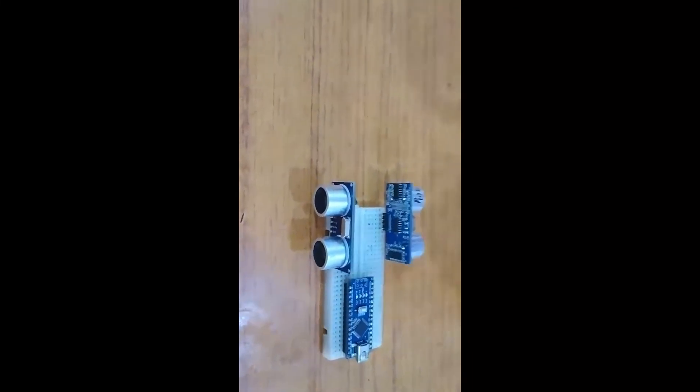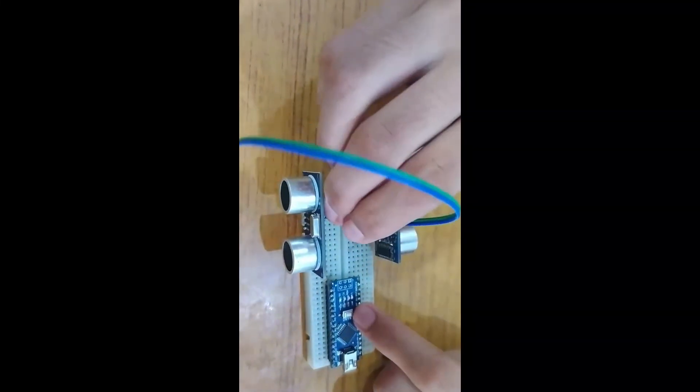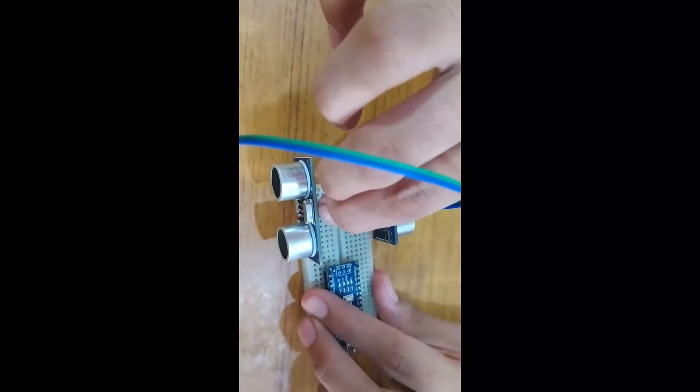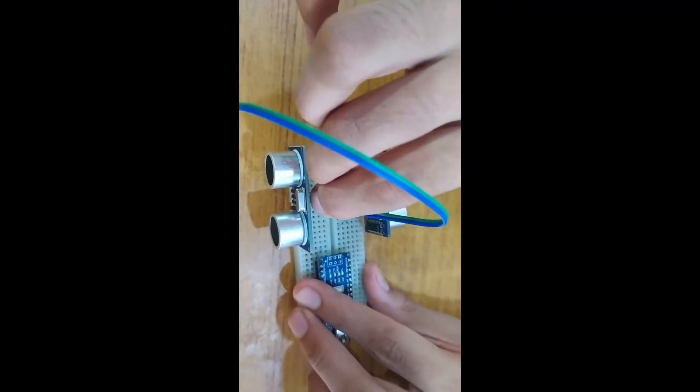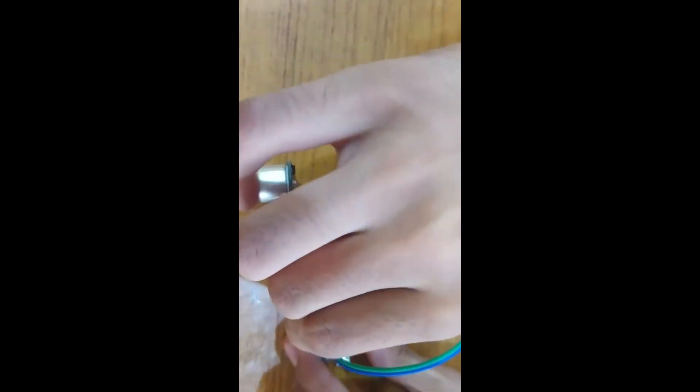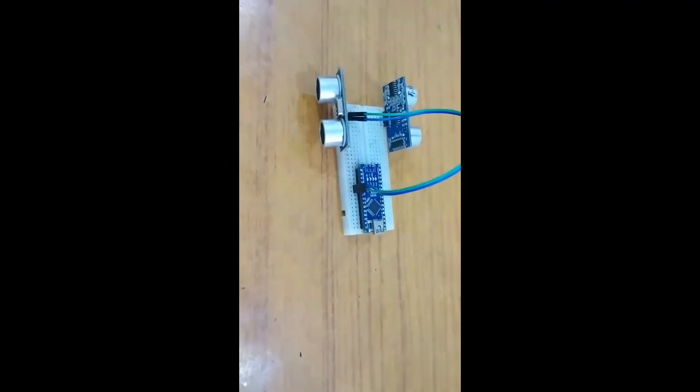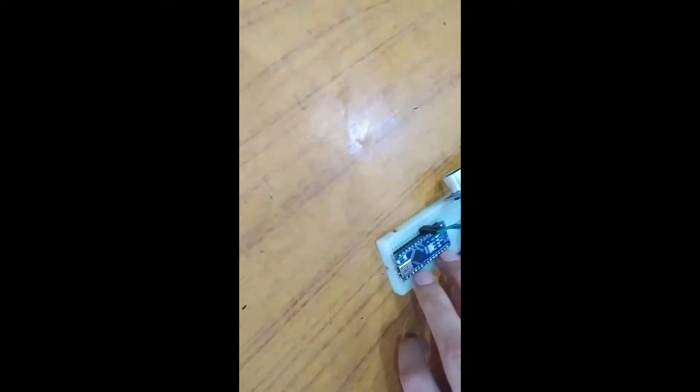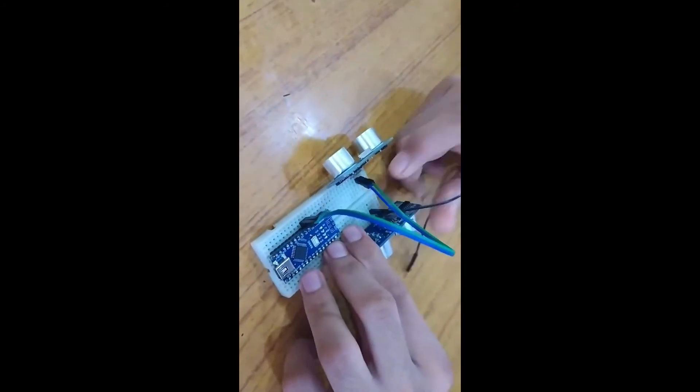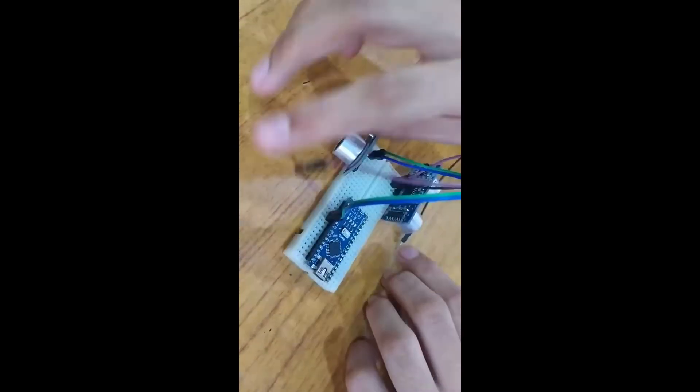First ultrasonic sensor's trig pin and echo pin will be connected to D2 and D3 of Arduino Nano. Next, I have to connect the trig pin and echo pin of the second ultrasonic sensor to D4 and D5.